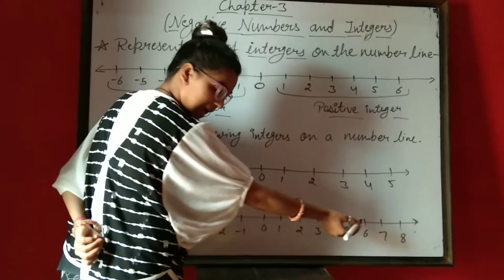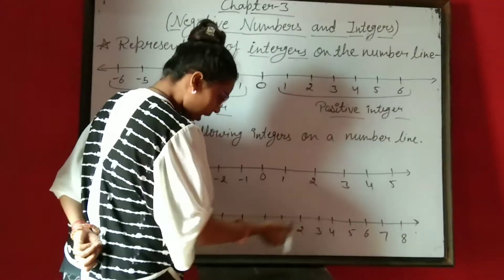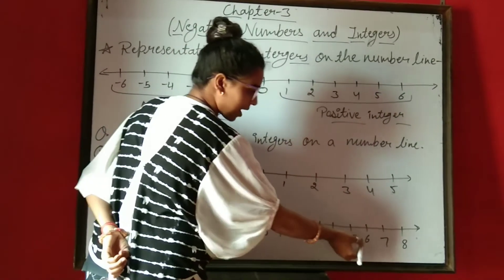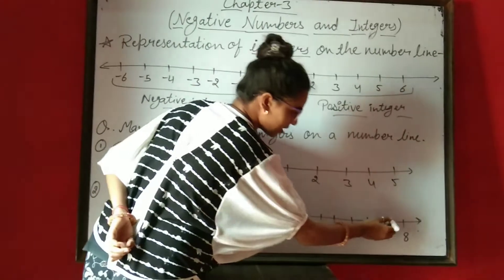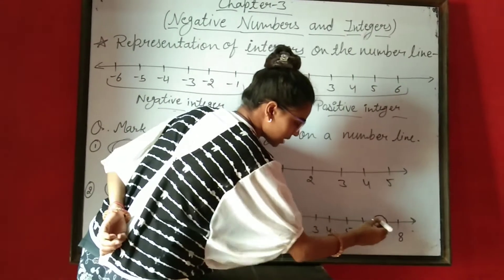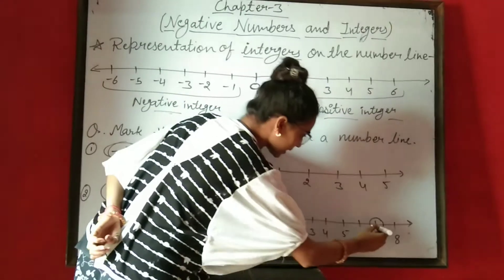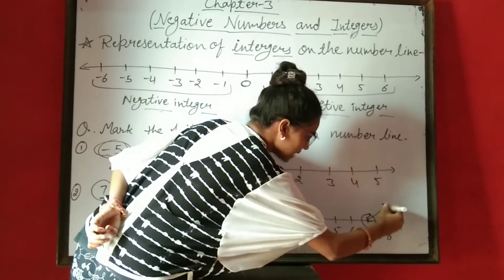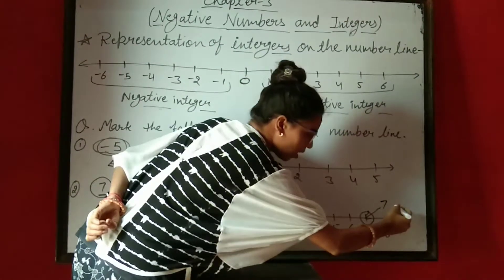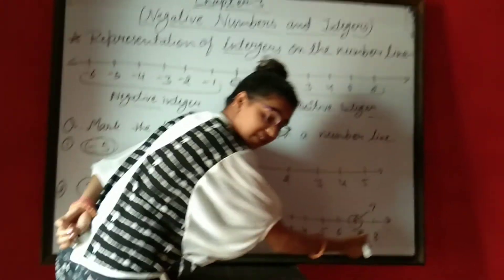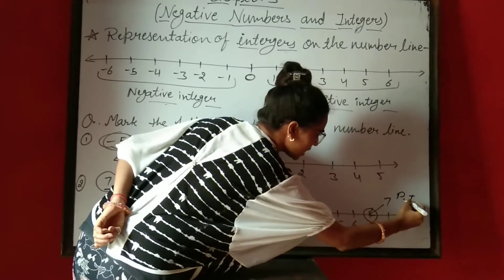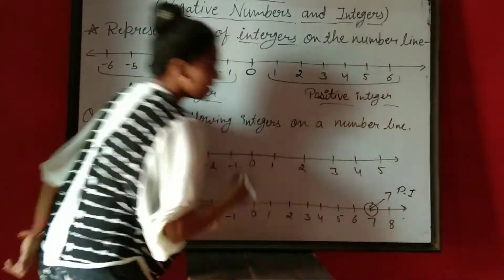So 7 हमारा कहां पर आएगा — आपने check करना है 7 कहां पर है. 1, 2, 3, 4, 5, 6, 7 — 7 is here. So 7 पर circle करके arrow लगा के 7 put कर दिया. और यह आपका positive integer है. So यहाँ पर positive integer लिख देंगे.